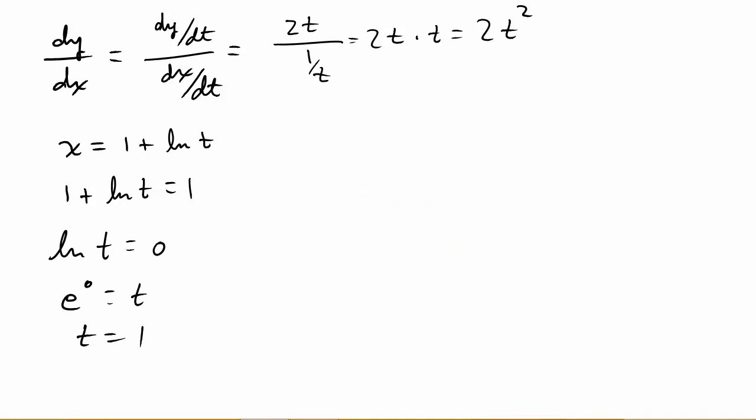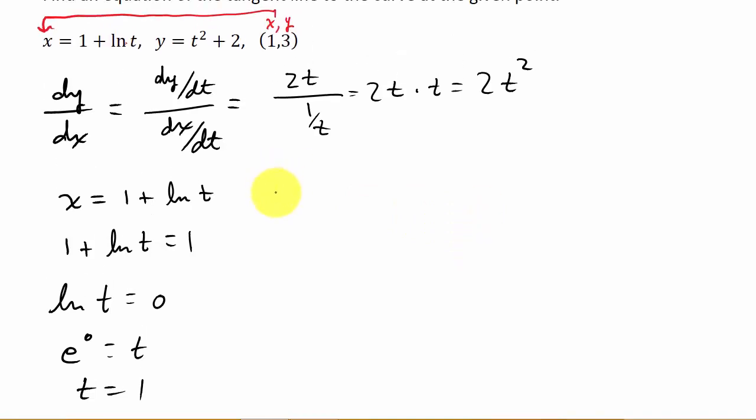So to find our slope, our slope is equal to the derivative here evaluated at 1. So that's 2 times 1 squared equals 2. So I have a slope of 2.